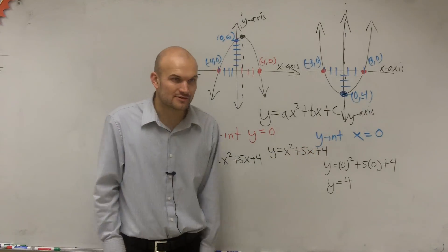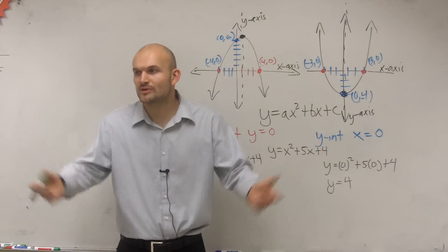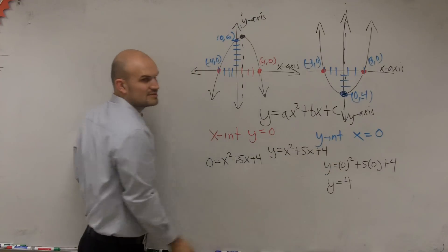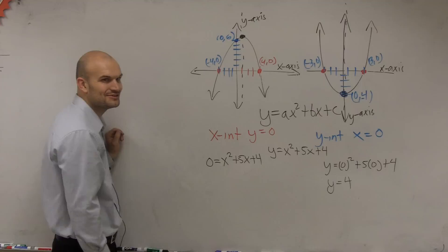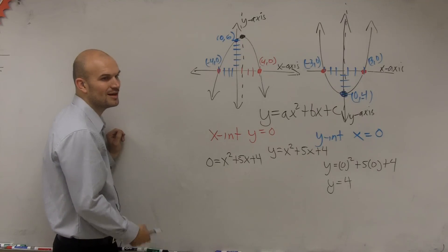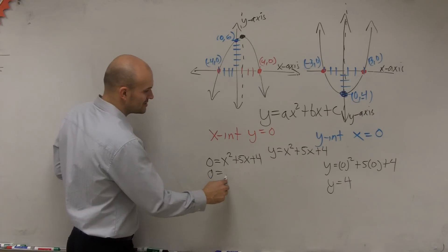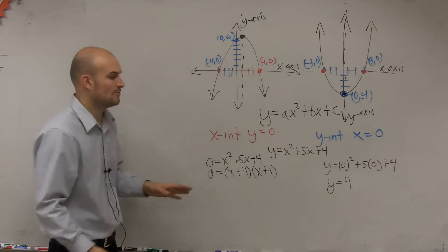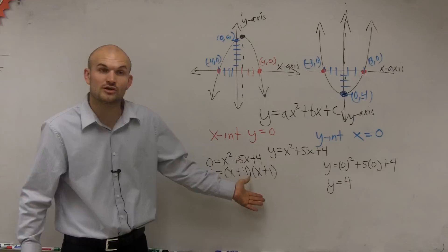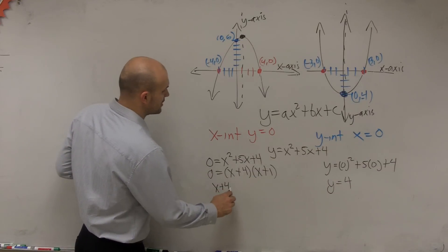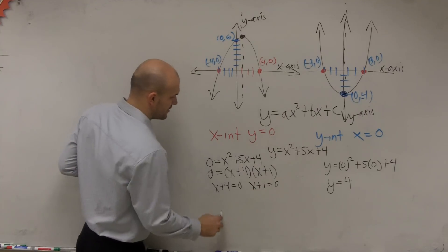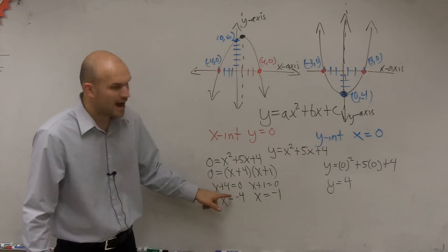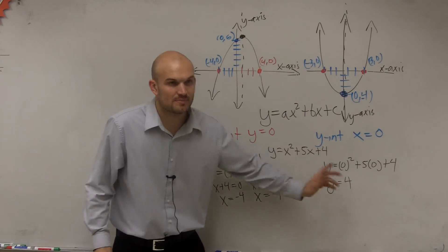You guys remember why we spent like three weeks factoring? Here's where the factoring part comes in. How do you solve for x when you have two of them? You have to factor. So 0 equals (x plus 4)(x plus 1). We need to find the value of x, so x plus 4 equals 0 and x plus 1 equals 0. Therefore, x equals negative 4 and x equals negative 1. So now I've found both of my x-intercepts and my y-intercept.